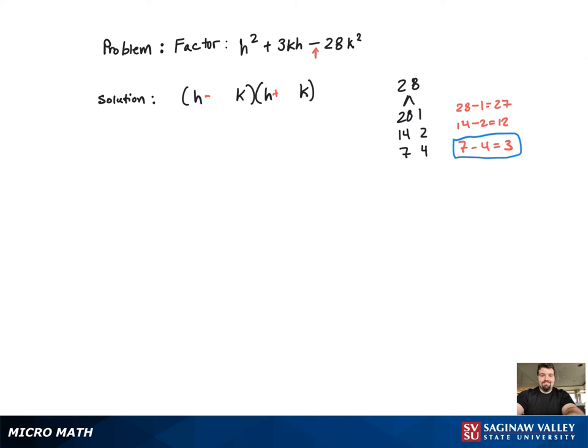So we need to put the 7 and the 4 as the coefficients of k. But we have two possibilities.